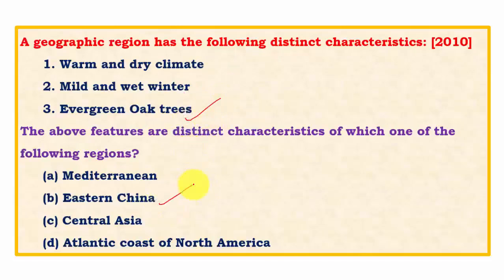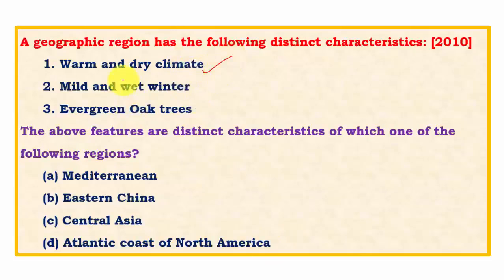Checking the other options: central Asia has steppe type climate — no oak trees, only grasses. The Atlantic coast of North America has Laurentian type climate on the eastern margins, with rainfall all year round and no distinct dry season, so it doesn't qualify as warm and dry. All other options can be ruled out. Evergreen oaks alone confirm that it is the Mediterranean type of climate.